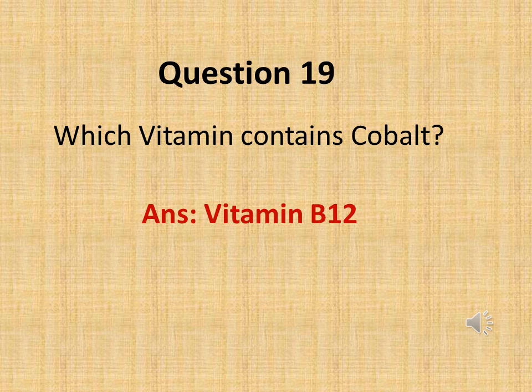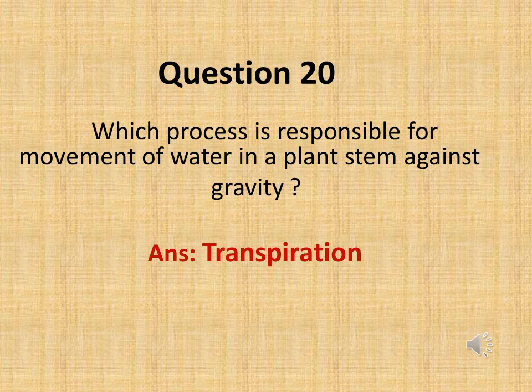The next question is: which vitamin contains cobalt metal? The answer is Vitamin B12 contains cobalt. The next question is: which process is responsible for the movement of water in a plant stem against gravity? The answer is transpiration. Thank you.